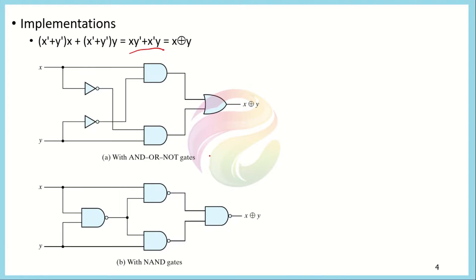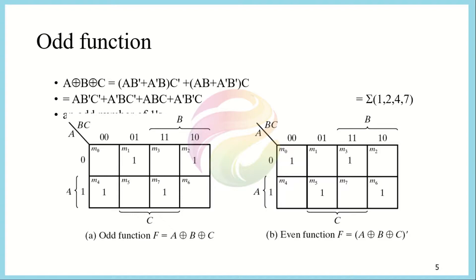If we want to represent exclusive OR using NAND gates, we can also do that. The output of the NAND gate is x·y whole complement, which by De Morgan's law equals x' + y'. The rest of the function remains the same, so we can represent the exclusive OR function entirely in NAND gates. Now we will be discussing the odd functions.